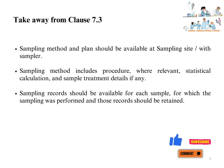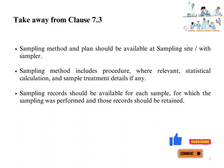Takeaway from Clause 7.3: The laboratory should have a sampling method and plan, and those should be available at the sampling site with the sampler. The sampling method includes procedures for sampling and, where relevant, statistical calculations for arriving at the number of samples to collect, and details of sample treatment if any. The sampling record should be available for each sample for which sampling was performed, retained as per requirements, with details essential for sampling, testing, and reporting of results.